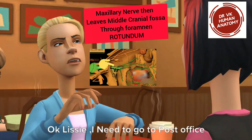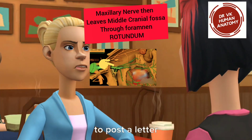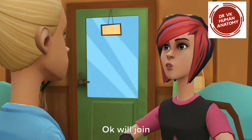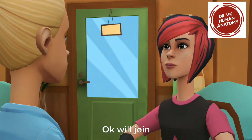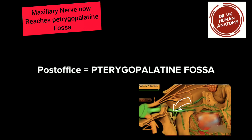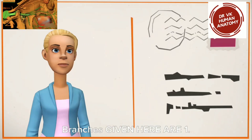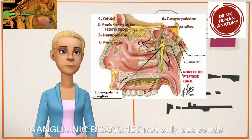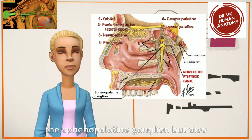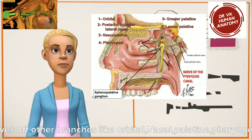Now I need to go to the post office to post a letter. Post office equals pterygopalatine fossa. The branches given here are: one — ganglionic branches, which not only suspend the sphenopalatine ganglion but also give off other branches.